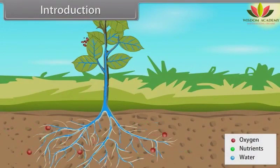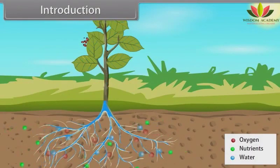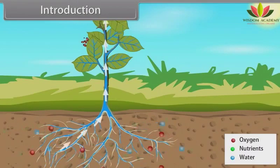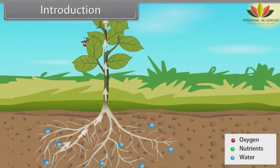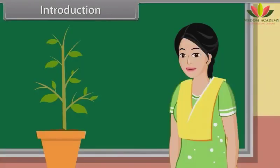One more thing I would like to tell you: there are five plant growth regulators. They are auxins, gibberellins, cytokinins, ethylene and abscisic acid. Now it's time to learn about plant growth and development.